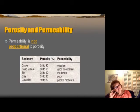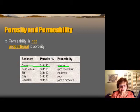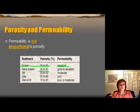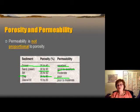Different rocks have different porosity and permeability. Gravel has high porosity and good permeability. Sand has relatively good porosity and good permeability. Clay has really high porosity but very poor permeability.